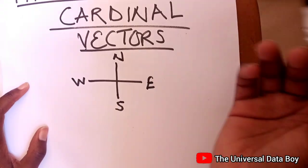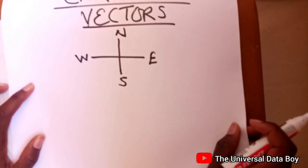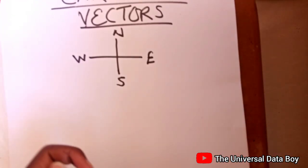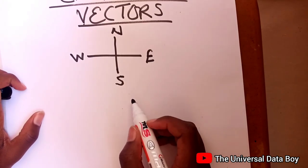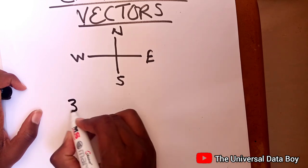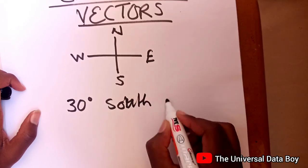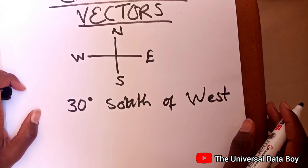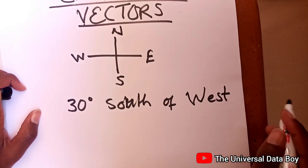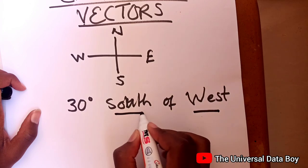So now we are usually given vectors like north of west, south of east, maybe 40 degrees south of west. So whenever you are given cardinal angles using cardinal directions, what you do is you must know the last cardinal direction represents where the angle is starting from, then the first one represents where the angle is going to.